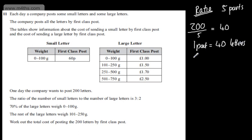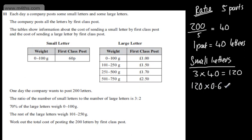If we now start off with the small letters, we have 3 parts. So it will be 3 times by the 40, which is equal to 120 letters. I'm now going to look at the cost of sending these. We can see that these are 60p each. We just need to be careful as we've got different units. We've got pence and we've got pounds. I'm going to write this as pounds, so this will be 120 multiplied by 0.6. That's going to give me 72 pounds.